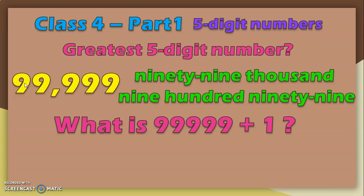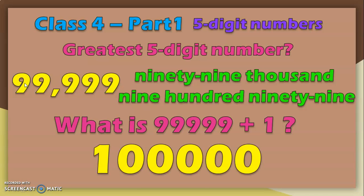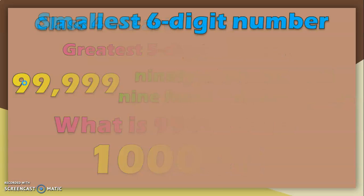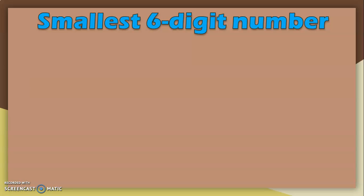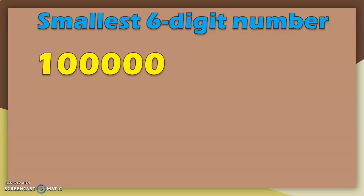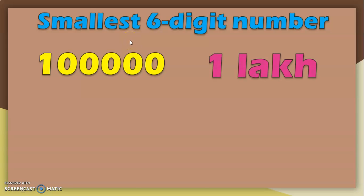What will happen if you add 1 to the greatest 5-digit number? You will get a 1 followed by 5 zeros. This is the smallest 6-digit number — let us count the digits: 1, 2, 3, 4, 5, 6. The greatest 5-digit number plus 1 forms this smallest 6-digit number, which is read as 1 lakh.